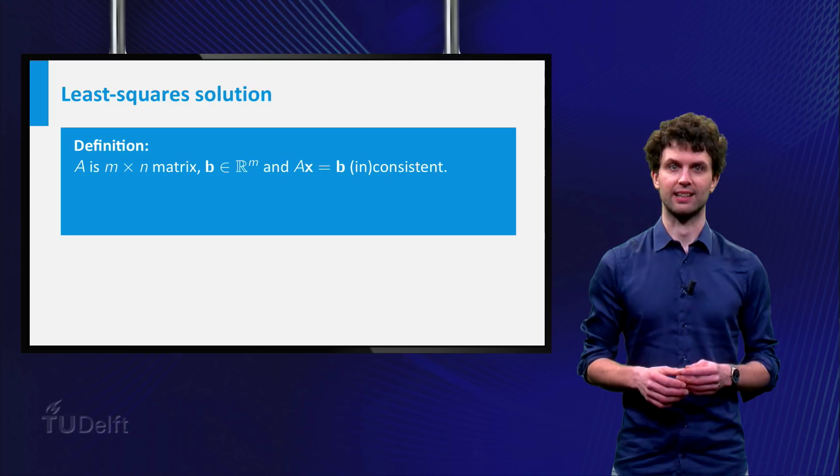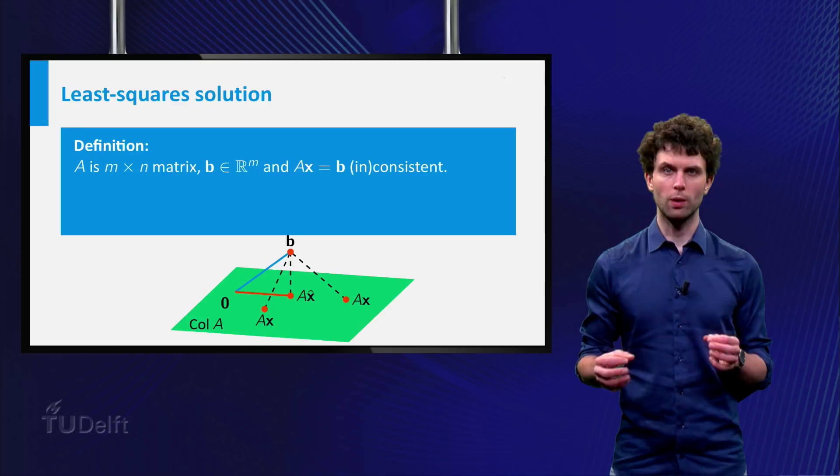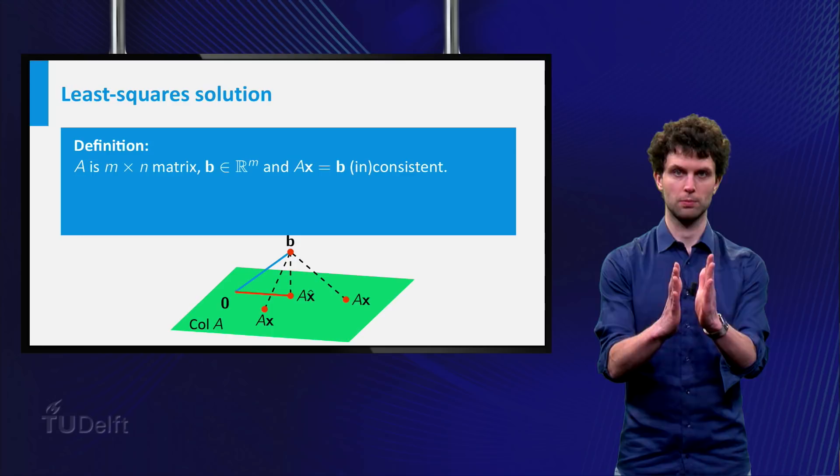If the system is inconsistent, then there exists no vector x such that Ax = b. The best thing we can do, if we need to find vectors x which are almost as good as a solution, is to find all vectors x for which the distance between Ax and b is as small as possible.